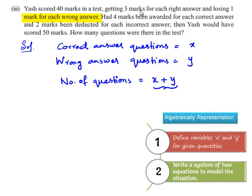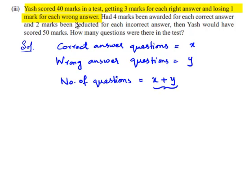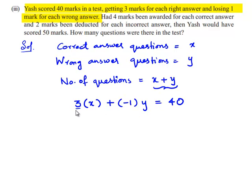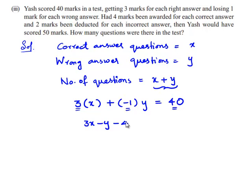According to the given problem, Yash scores 40 marks if 3 marks are awarded for each right answer and 1 mark is deducted for each wrong answer. So we can say that 3 times x plus minus 1 times y is equal to 40, because for each correct answer 3 marks are given and for each wrong answer 1 mark is deducted. This equation becomes 3x minus y minus 40 equals 0. Name this equation number 1.